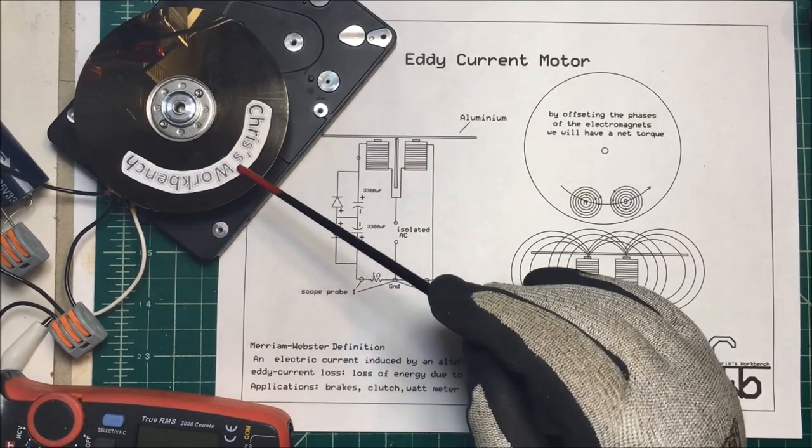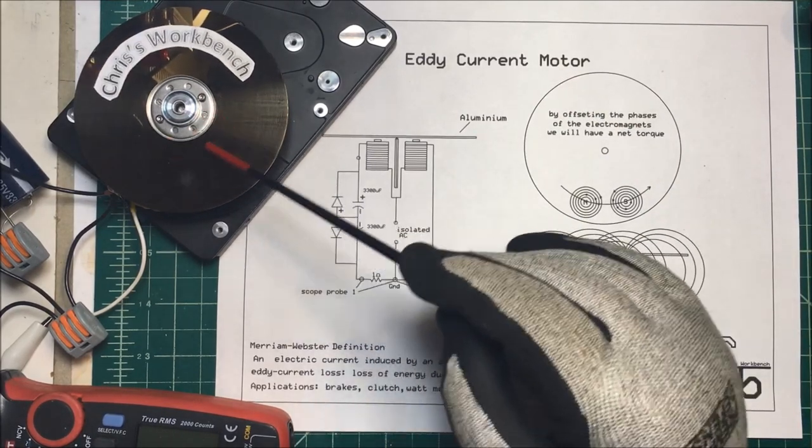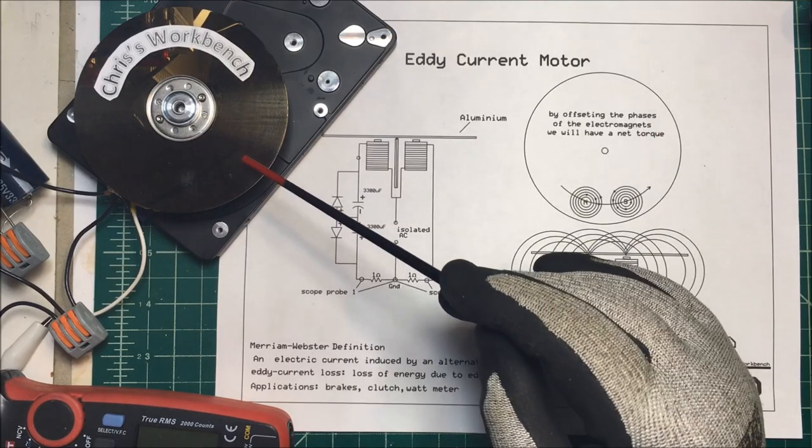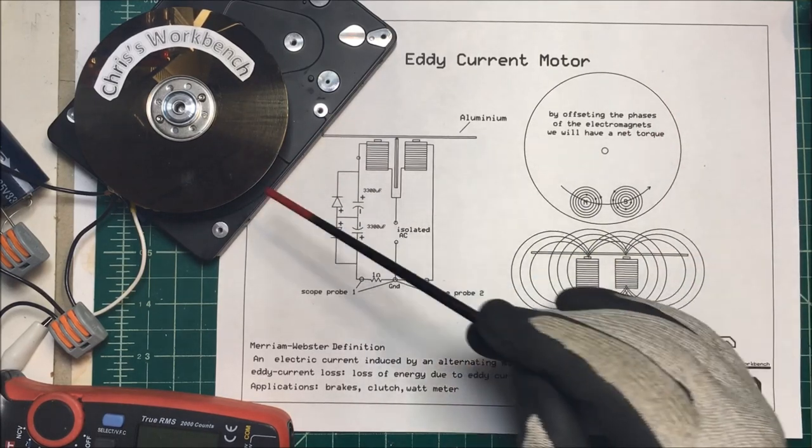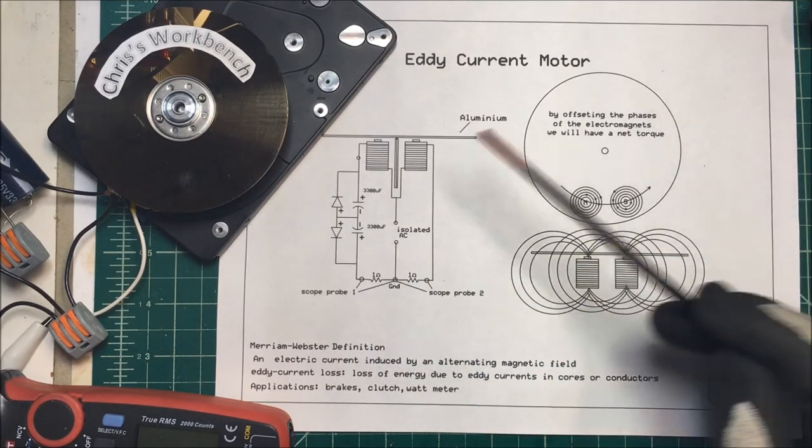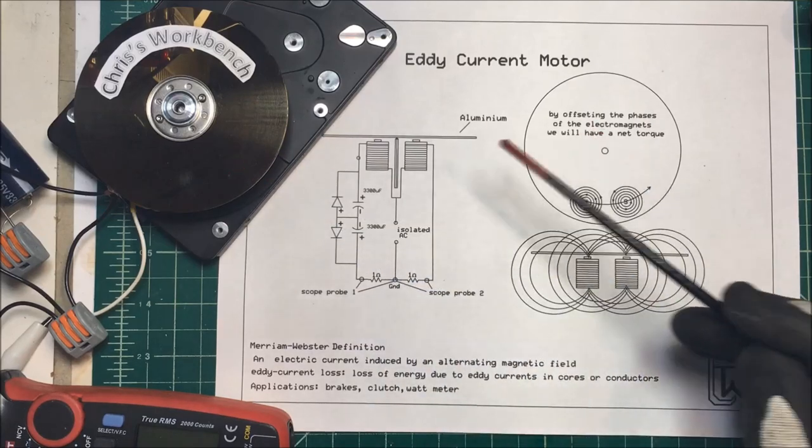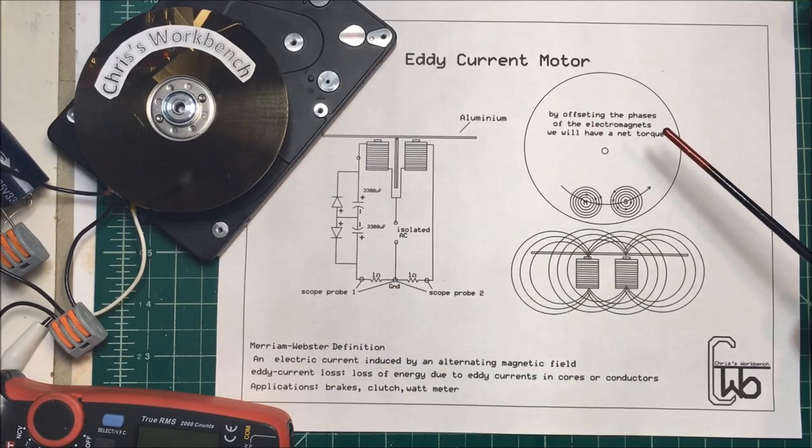Let's talk about an eddy current motor. I'm using an old hard drive to make an eddy current motor. These discs are aluminum and if you change the magnetic field in this disc it will create eddy currents and that's going to create a magnetic field in the disc there.